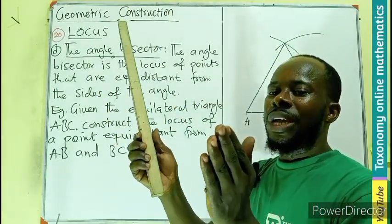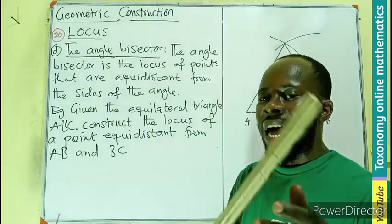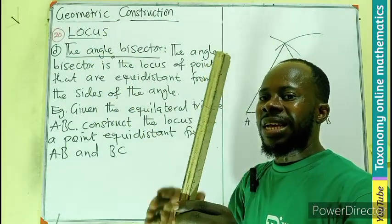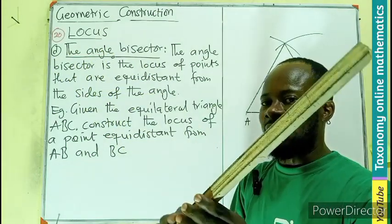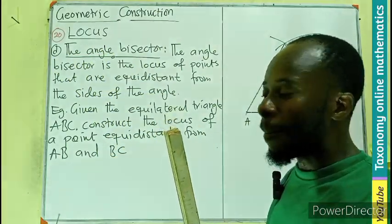Two lines that incline to produce the angle. We know angles are formed by the initial line and the terminal line. Those two lines that incline, we want to bisect them.